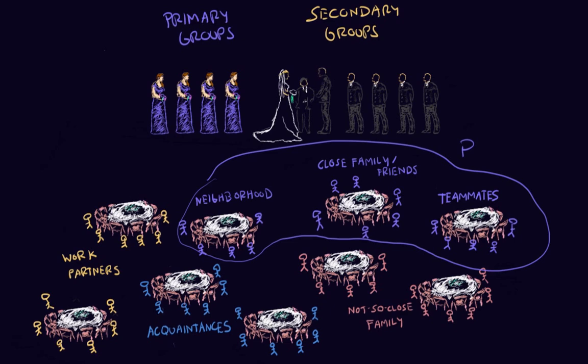As we make our way around the reception, we can see there are many different secondary groups as well. Over here, the bride and groom's parents may have invited some of their important work partners. Over here, there is some distant family that is only seen once or twice a year or at big family gatherings. And let's say over here there are some acquaintances — they aren't close friends, but they're well-connected and could help the bride and groom in the future, so they were invited to the wedding. These secondary groups are more formal and goal-oriented; many guests are there to keep strong relationships in case they are needed in the future, to make money, or perhaps the distant family members are there to keep everyone happy and avoid family drama.